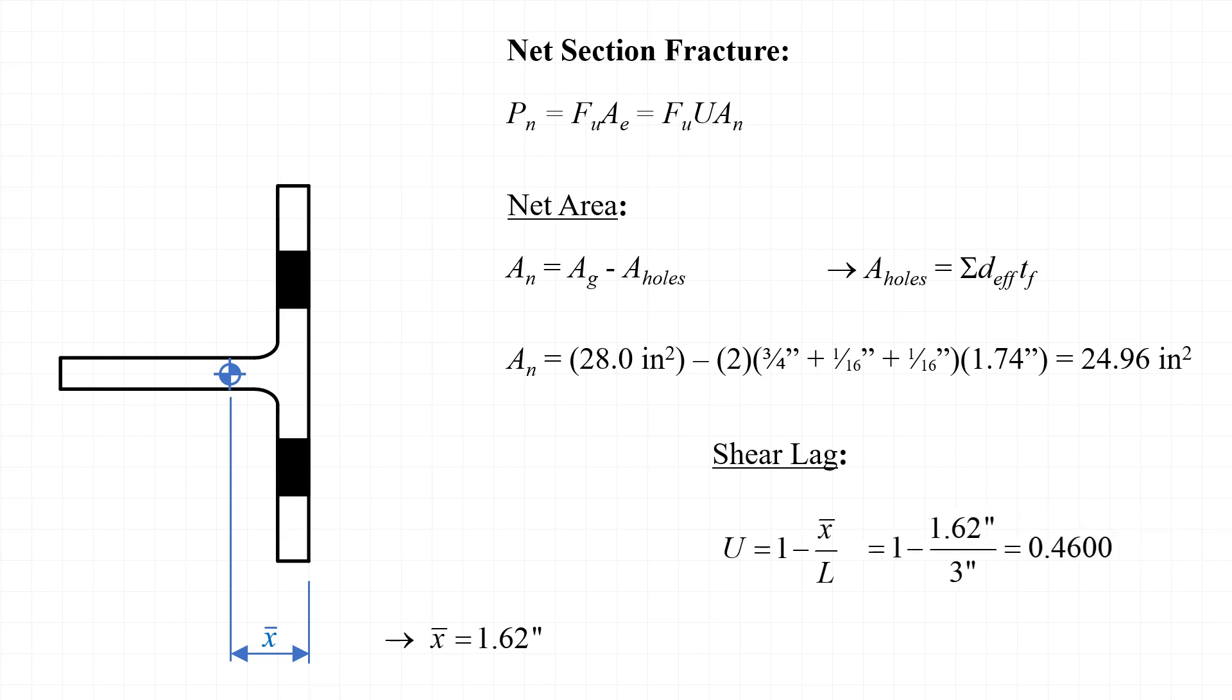So if we substitute 1.62 inches in for x̄, and if we assume that the bolts are spaced at 3 inches along the length of the member, then we can calculate a shear lag reduction coefficient of u equal to 1 minus 1.62 divided by 3 equal to 0.46.